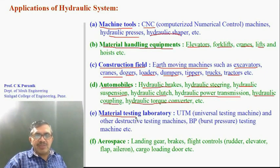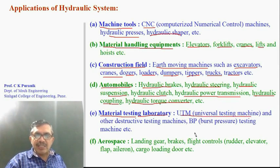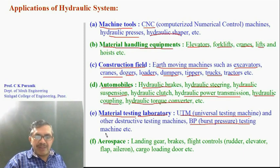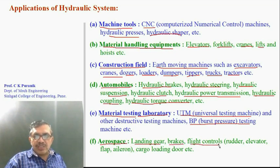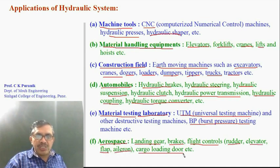Hydraulic systems are used in material testing laboratories for the universal testing machine used in strength of materials labs, and burst pressure testing machines to test the burst pressure of pipes. They are also used in aeroplanes for landing gears, brakes, flight controls such as the rudder, elevator, flaps, and ailerons, as well as cargo loading doors.